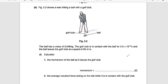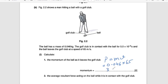Figure 2.2 shows a man hitting a ball with a golf club. The ball has a mass of 0.046 kilograms. The golf club is in contact with the ball for 5 × 10⁻⁴ seconds, and the ball leaves the golf club at a speed of 65 meters per second. Calculate the momentum: p = mass × velocity = 0.046 × 65 = 3 kilogram meters per second, which can also be written as 3 newton-seconds.